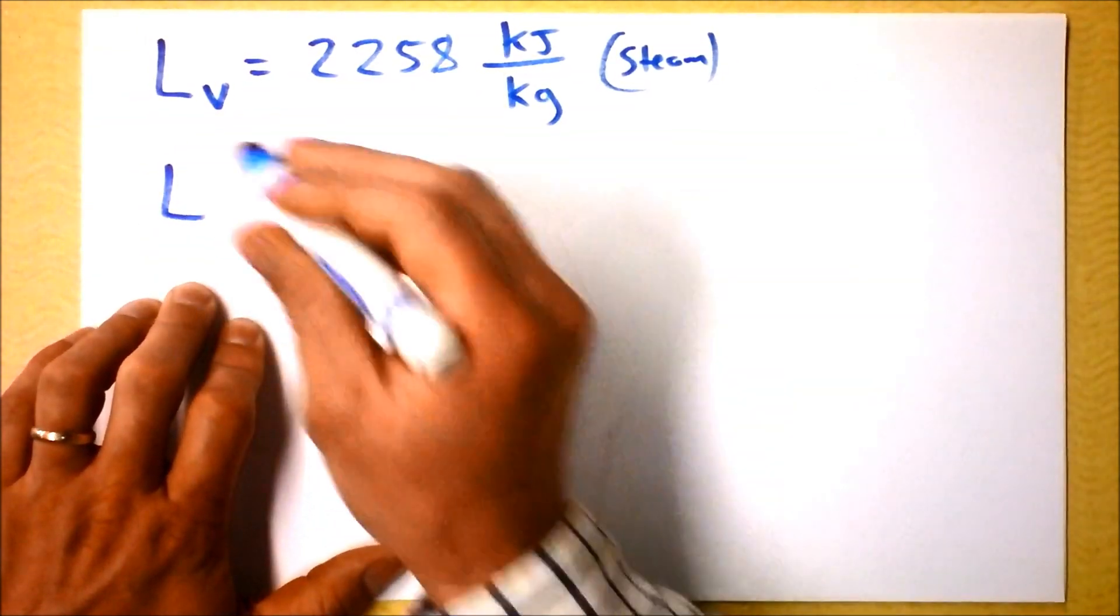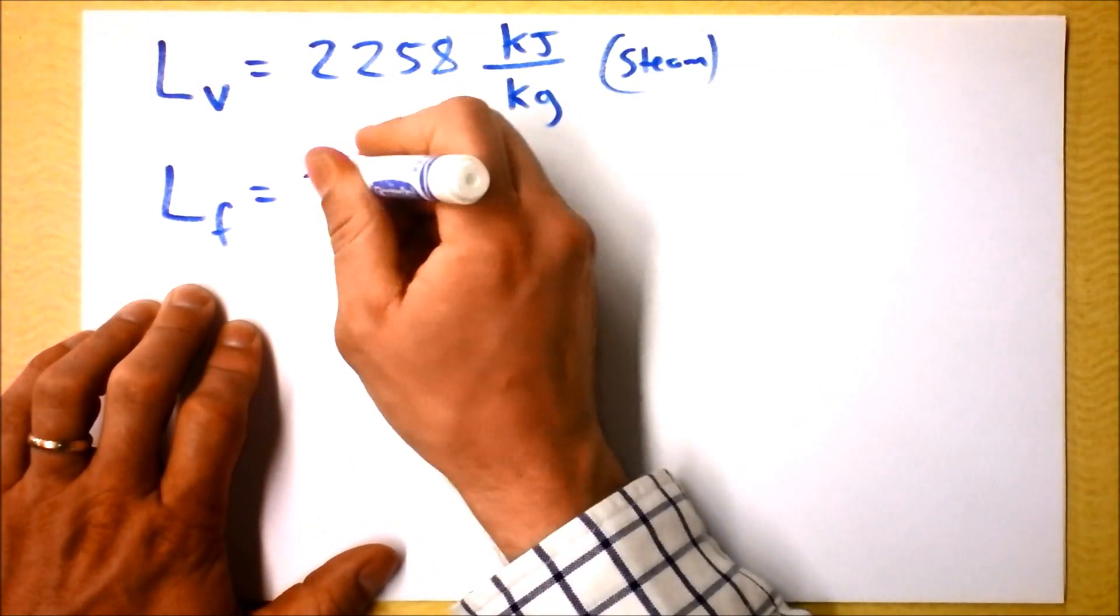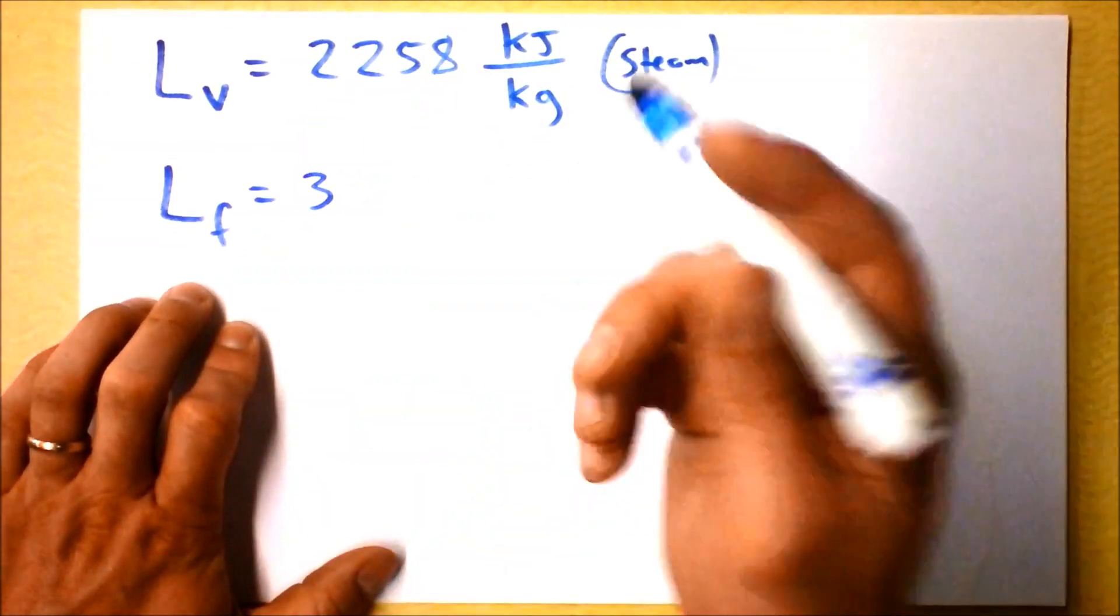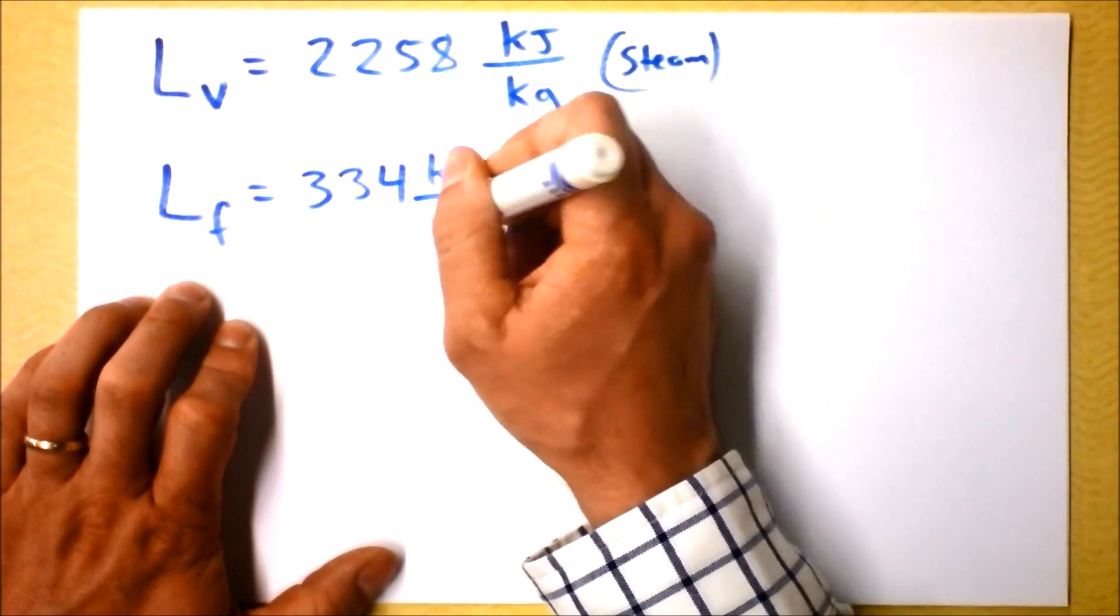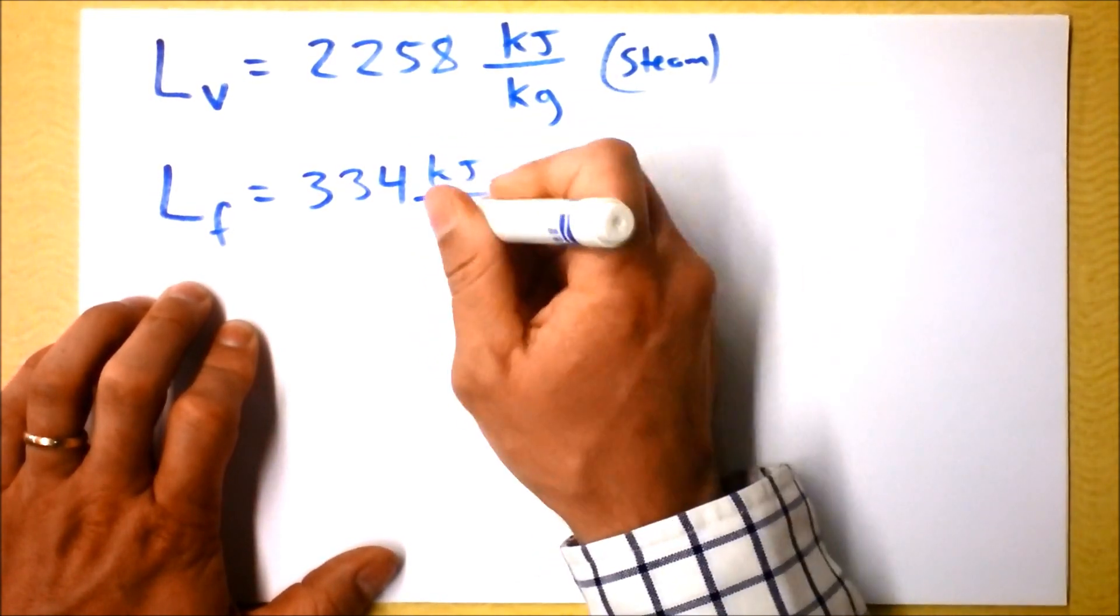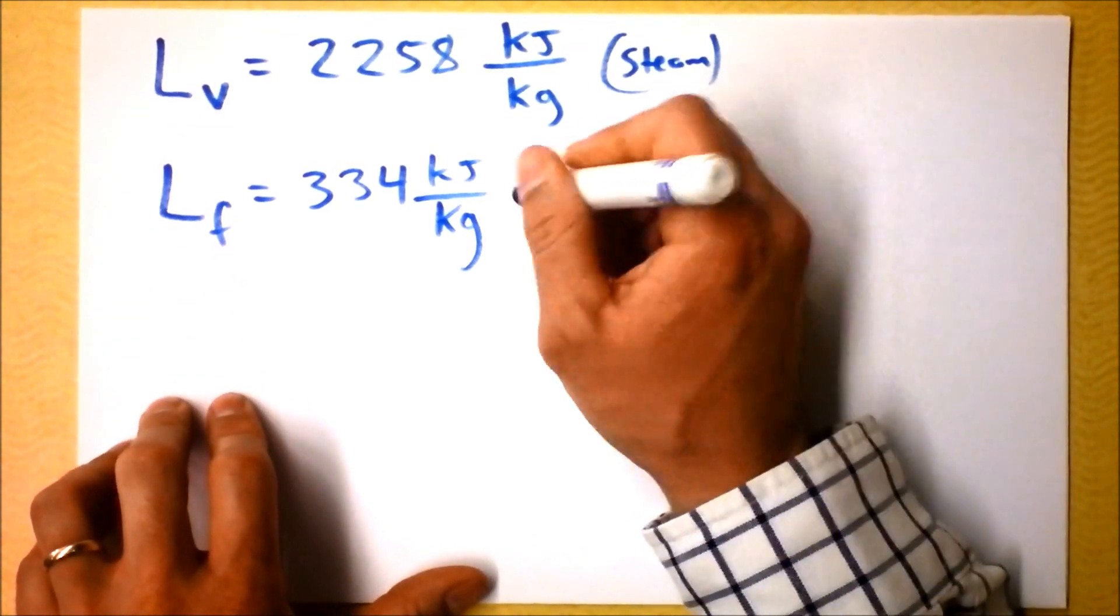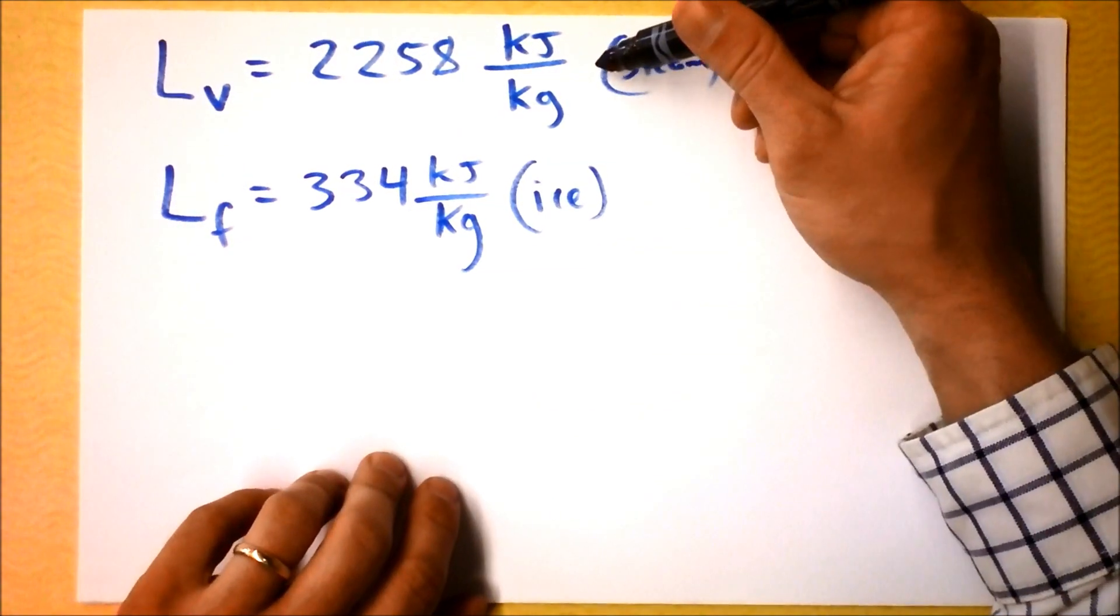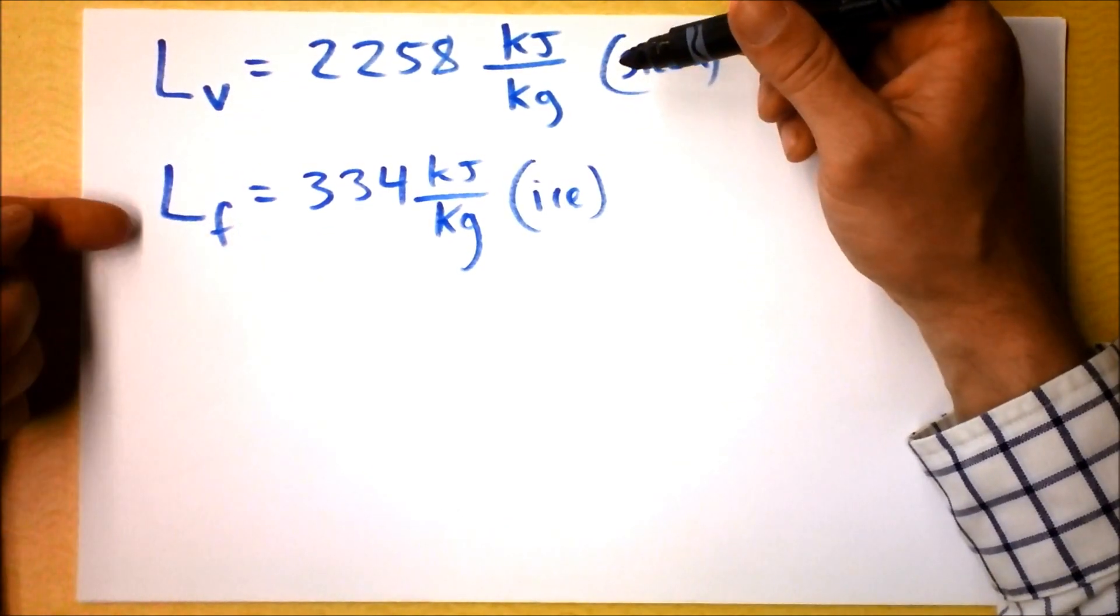And we've also got the latent heat of fusion for ice, and that's quite a bit less. In fact, stunningly less. It's much easier to melt ice than it is to condense steam or to boil water. 334 kilojoules per kilogram. So this already makes me feel like the temperature of our mix might be kind of high when we're all finished. That's because it's going to take way more energy to condense some steam than it is to melt some ice.